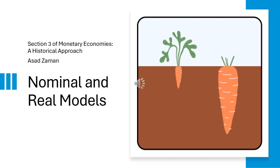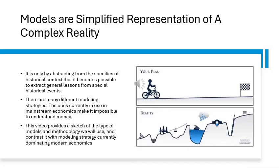Bismillah ar-Rahman ar-Rahim. Learning lessons from history requires stripping away the specifics and the particular and creating an abstract model which preserves some of the structure across time. There are many modeling strategies in use. The goal of this lecture is to show that the mainstream methodology, which is based on a nominalist strategy, is wrong and an alternative is available, which we hope to demonstrate.